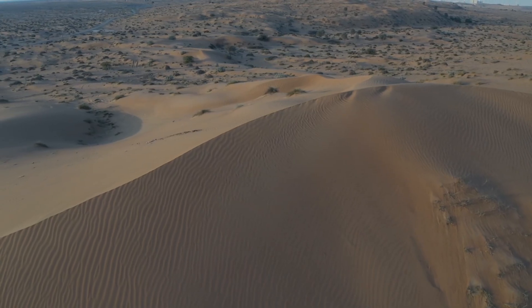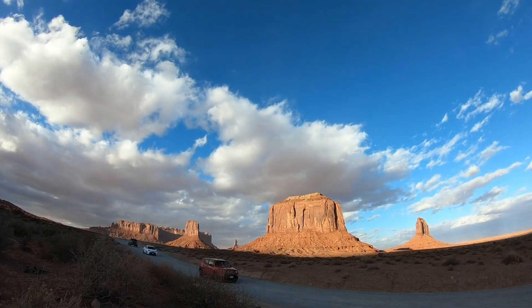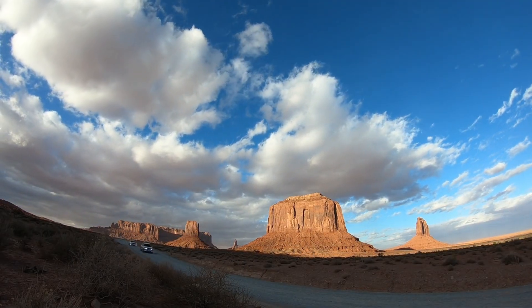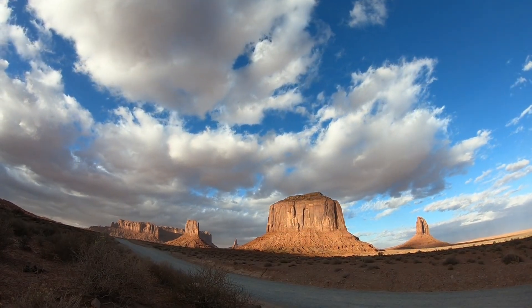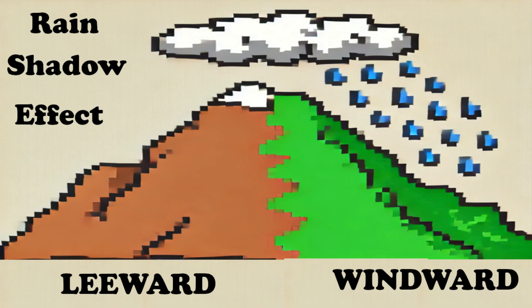Continental interiors might also develop hot deserts because regions deep within continents become dry as air currents lose most of their moisture after traveling long distances over land. You might also see hot deserts develop as a result of rain shadows, where mountain ranges block moist air from oceans, causing rain on the windward side and leaving the leeward side dry.